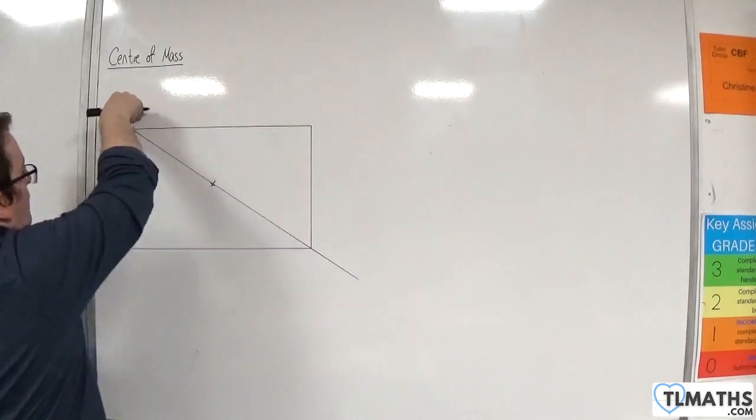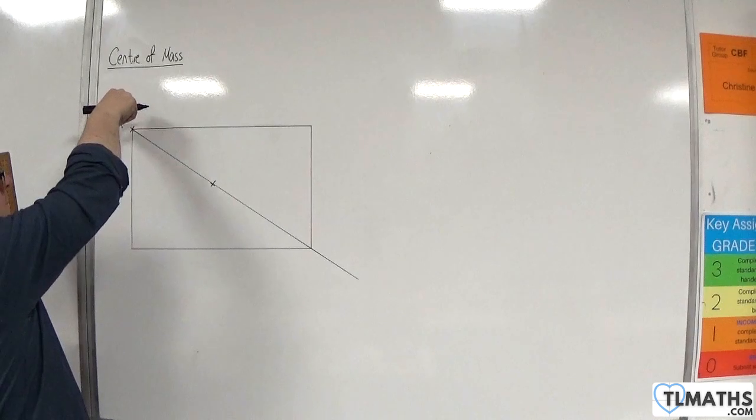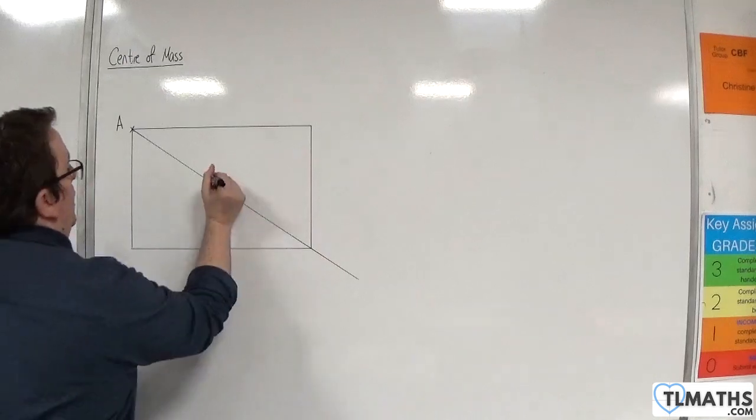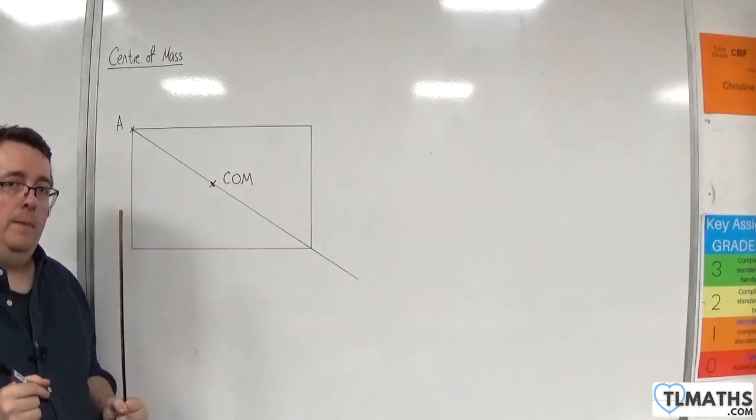If I hung the lamina from that point, then that would be going straight downwards towards the ground, and it would go through your centre of mass, like so.